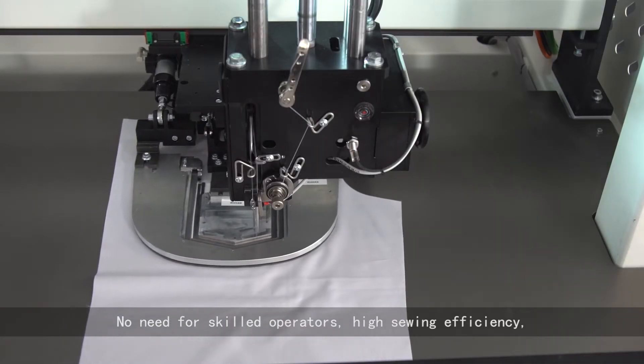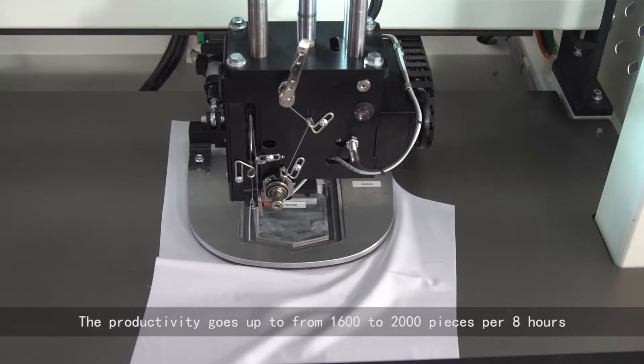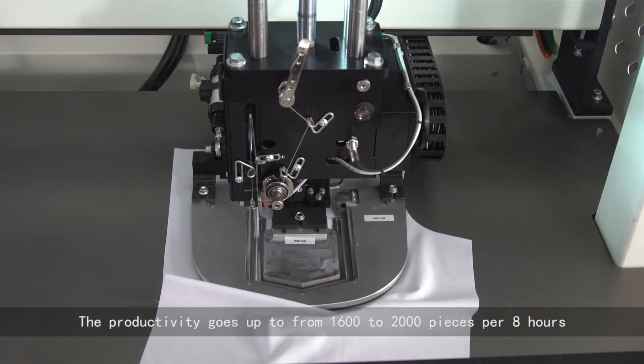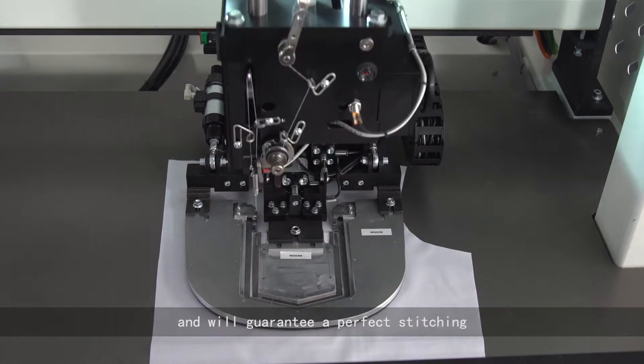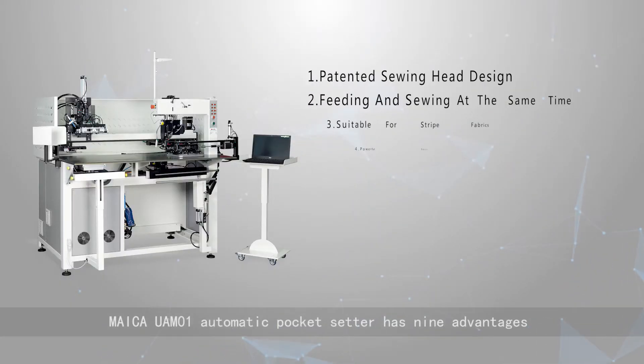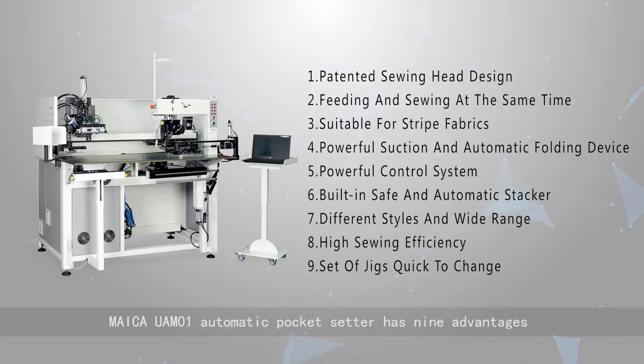High sewing efficiency. The productivity goes up from 1,600 to 2,000 pieces per 8 hours and will guarantee a perfect stitching. Mica UAM01 Automatic Pocket Setter has 9 advantages.